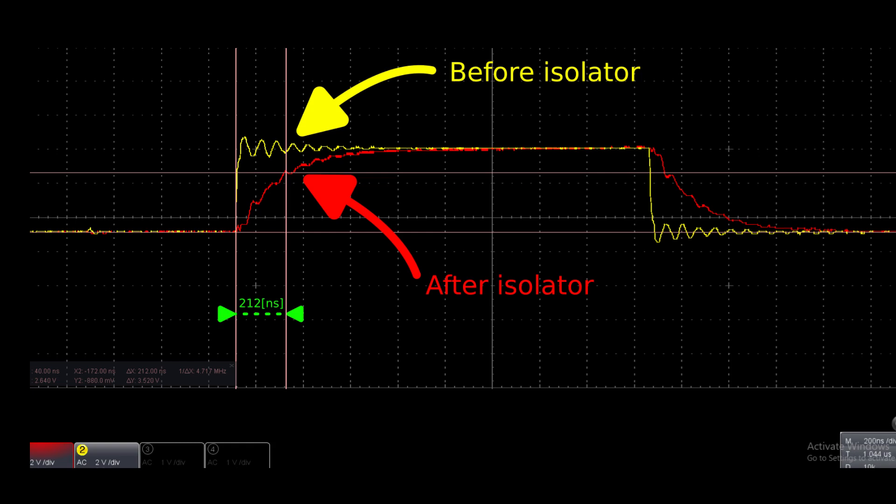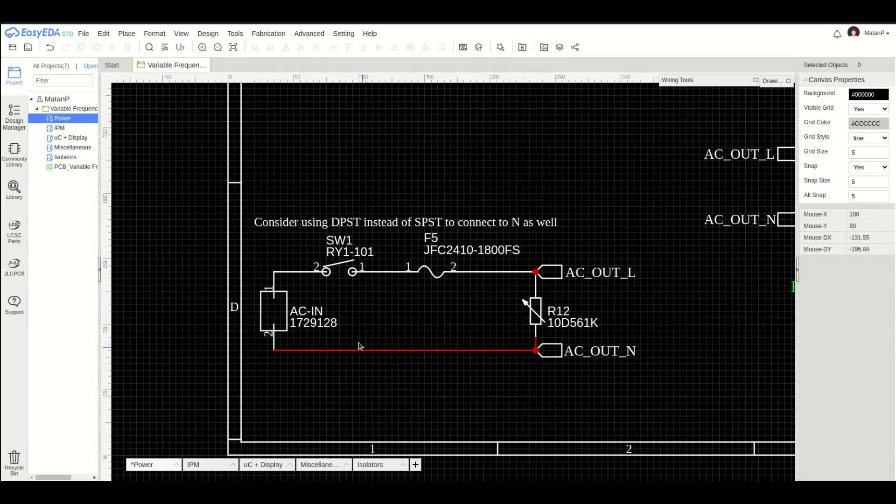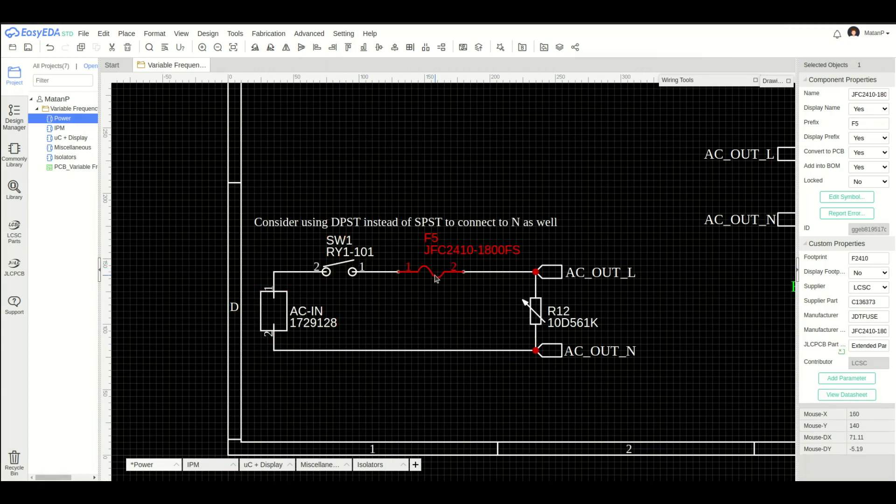Now let's go over to the schematics. Okay, we're in the power block right now. Here's the AC input, the rocker switch, the fuse, and the varistor.